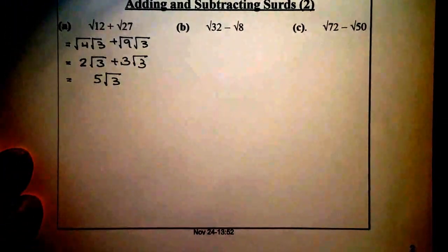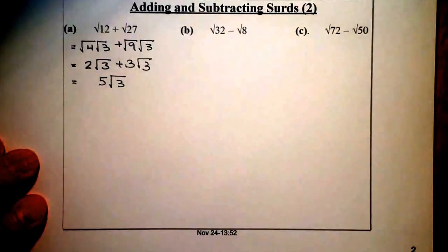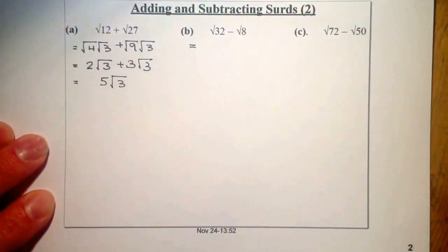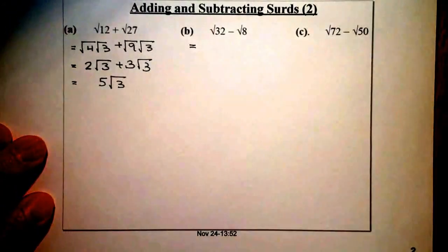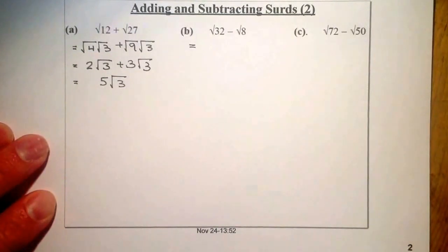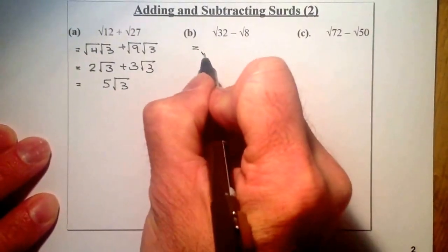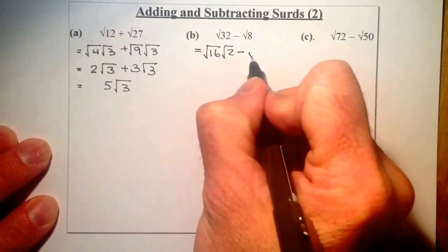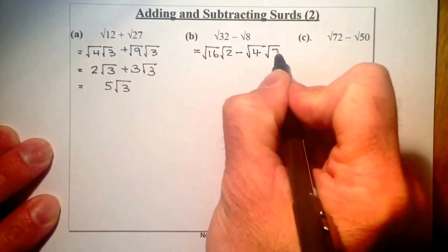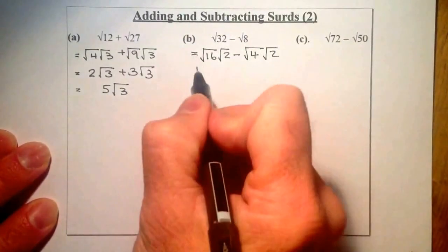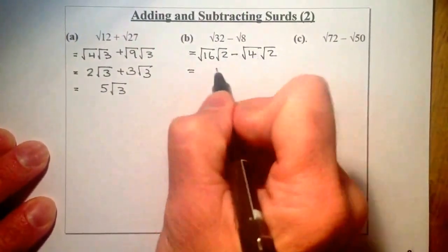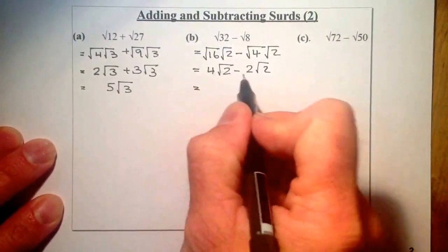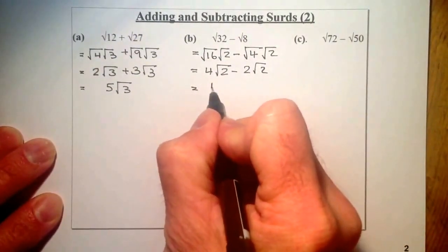Try the other two if you can — freeze the video and try them. So root thirty-two and root eight are very common numbers used in National Five. I'm going to use root sixteen times root two, since sixteen times two gives me thirty-two, giving me four root two. For root eight, four times two gives me eight, so that's two root two. So I've got four root two minus two root two, which gives me two root two.